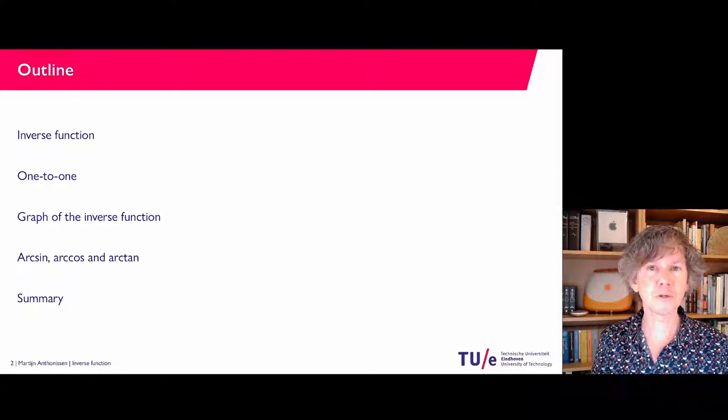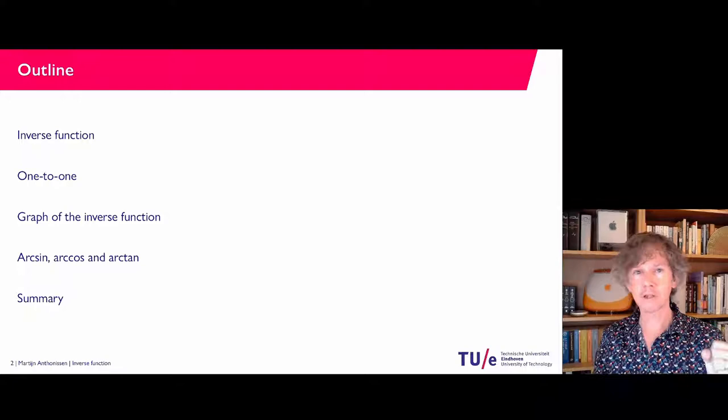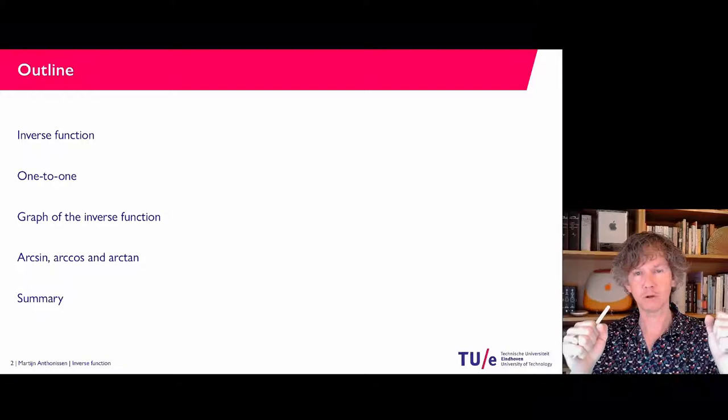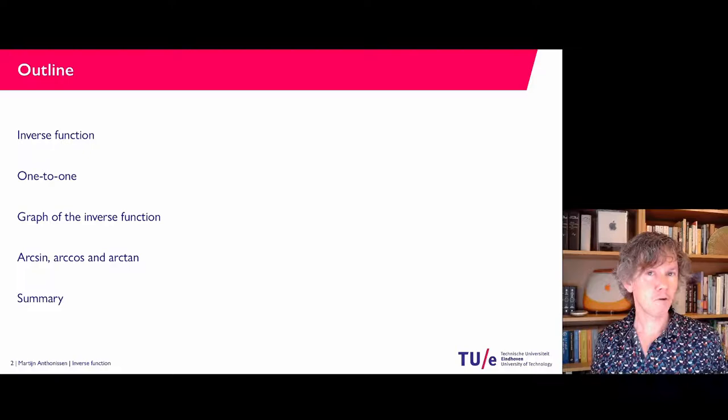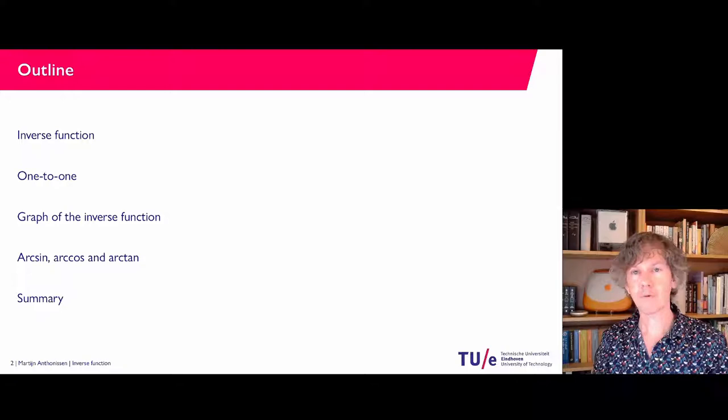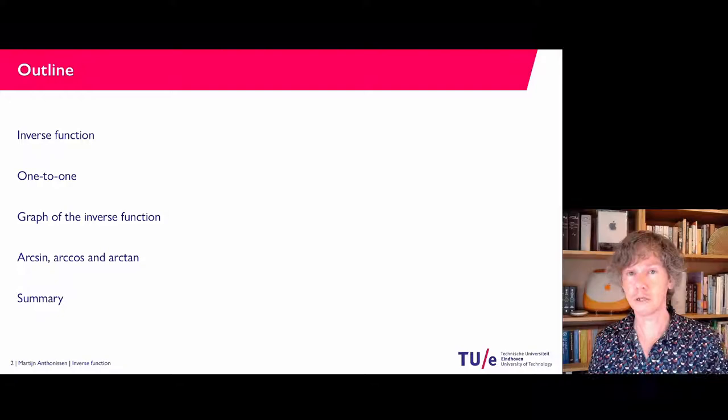First I'm going to explain what an inverse function is and when it exists. It exists, as we will see, if a function is one-to-one. That basically means that if you take an x there is a unique y that you map it to, and for every y there is only one x — so there is a one-to-one correspondence. The graphs of a function and its inverse are related, and we will see how. In particular we will look at the inverses of the sine, cosine, and tangent functions.